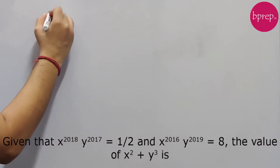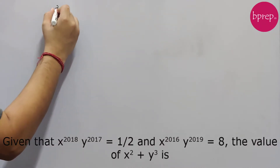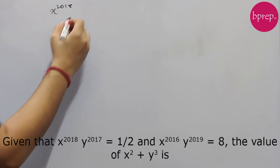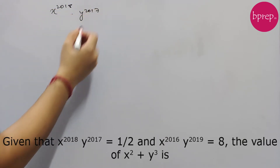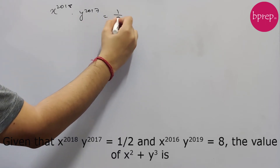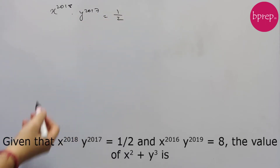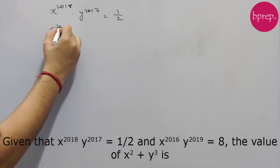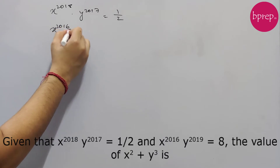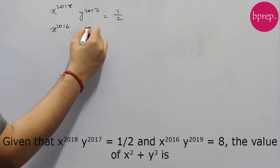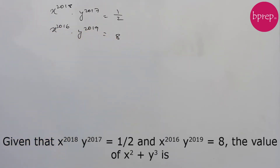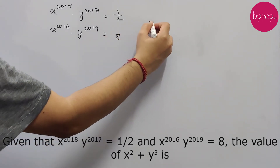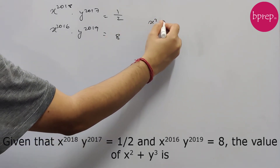It is given that x to the power 2018 into y to the power 2017 equals to half, and one more expression is given as x to the power 2016 into y to the power 2019, which equals to 8. We need to find out the value of x squared plus y cubed.